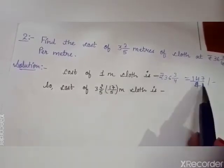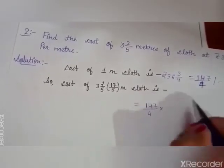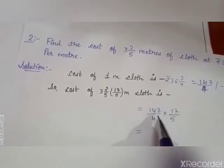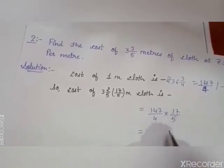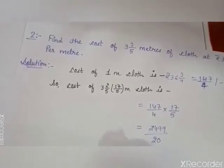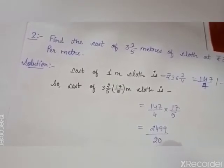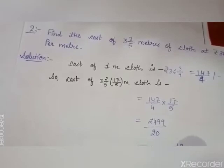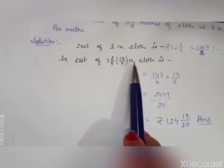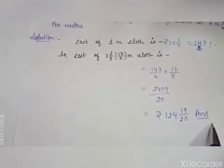So, we multiply 147 by 4 into 17 by 5. We multiply 147 into 17 and get 2499. And 4 into 5 is 20. After dividing this, we get 124 whole 19 upon 20 rupees. That means, the cost of 17 by 5 meters of cloth is Rs. 124 whole 19 by 20. That's your answer.